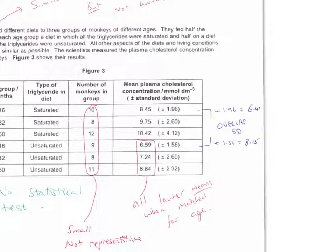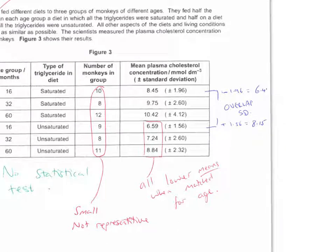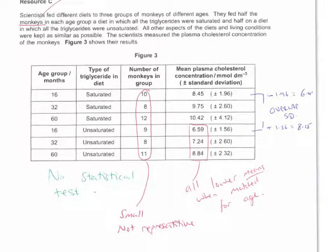You can see that we've got a small sample size, which tells us that it's not representative. We can see that when looking at the numbers, each of these is a lower mean for unsaturated when you compare the age groups with each other. So 16 with 16, that's lower. 32 with 32, that's lower. 60 with 60, that's lower. So there's a lower mean when matched for age.